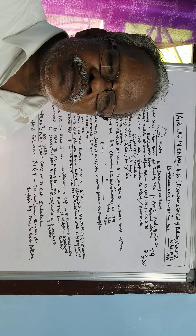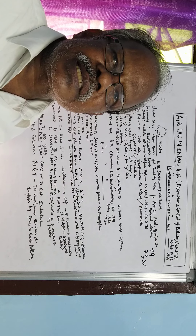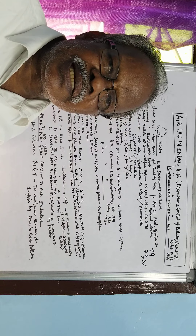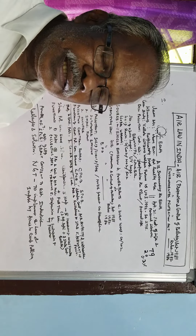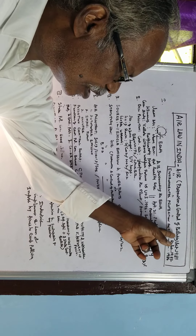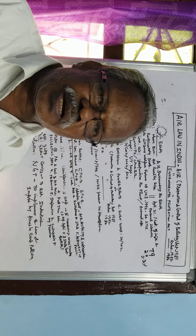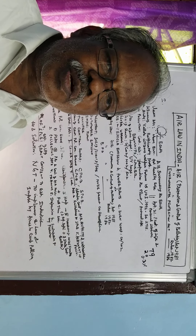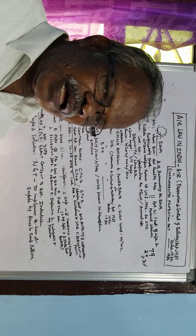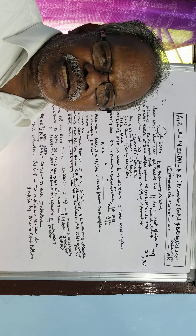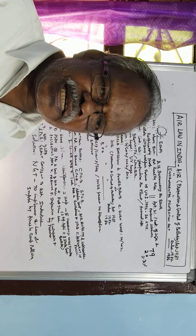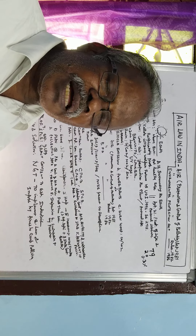Today in this video we are going to see about air prevention, control and prevention of pollution, which is very essential for the protection of environment. This has been safeguarded by the Air Prevention and Control of Pollution Act 1981, Air Prevention and Control of Pollution Rules 1982, and also by the Environmental Protection Act 1986. These acts and rules safeguard the environment because air is very essential for breathing and the sustenance of life.